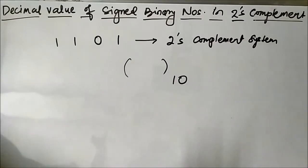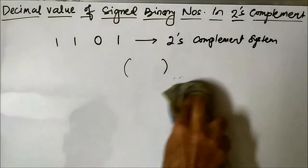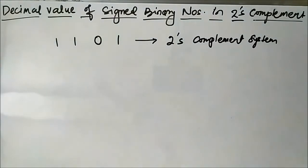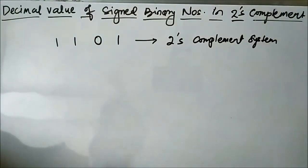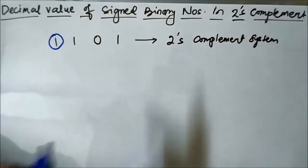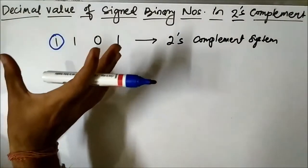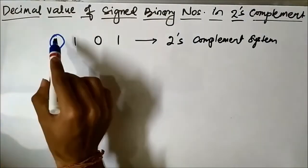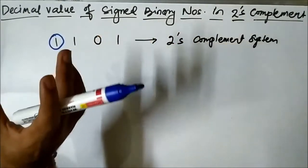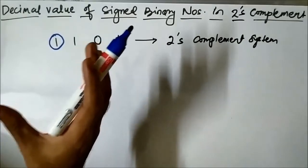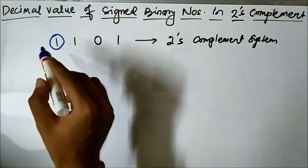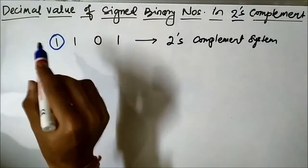How we have to proceed? This process is also similar to the 1s complement system with a few minor changes. If you have not watched the 1s complement video, please check out that video first. Now, by looking at the extreme left bit — the MSB bit which is 1 — we can say that it is a negative integer. If the MSB sign bit is 1, the number is negative; if it is 0, it is a positive integer. Here it is 1, so it is a negative integer.